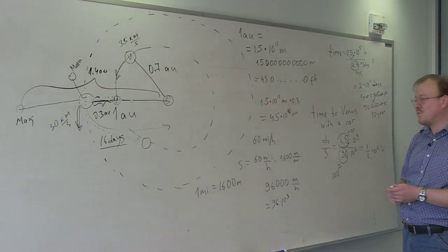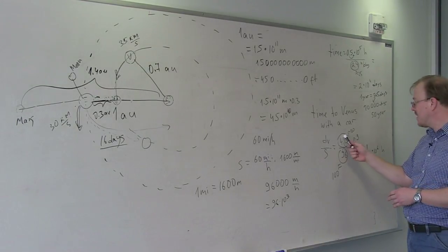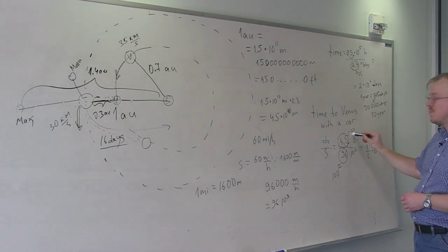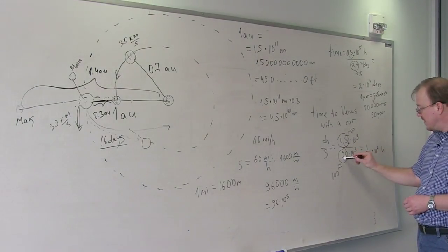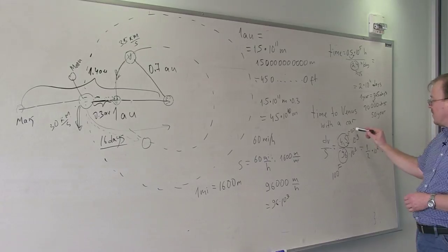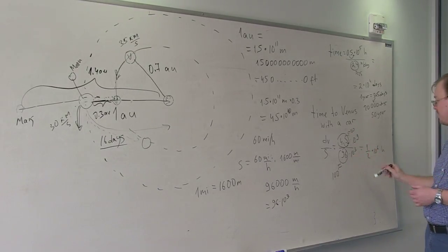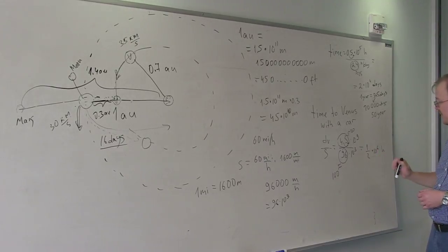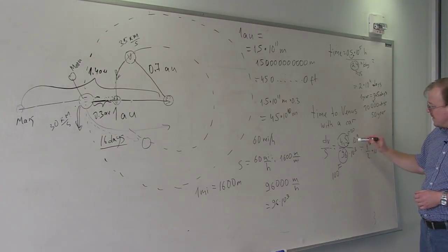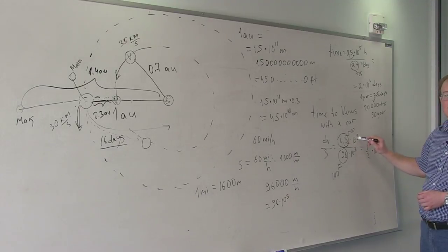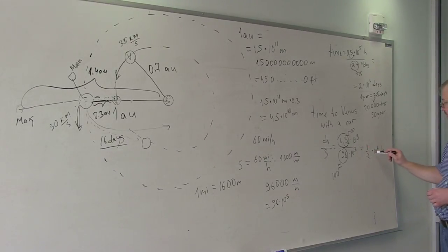Now we do what typically scientists do when we don't have a calculator. We round numbers a little bit to make math easier. So 45 is almost 50, 96 is almost 100. Now my job is easier. I divide 50 by 100, which is just one half. Now when I count zeros, I used to have nine zeros and I divide by three zeros, so I remove three zeros. So we have one half times 10 to the 6 hours.